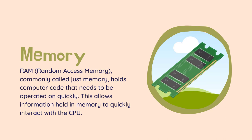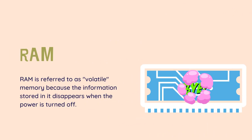All computers do this automatically. RAM is just one part of the computer that determines your speed. RAM is referred to as volatile memory because the information stored in it disappears when the power is turned off. Hard drives and flash drives, on the other hand, contain non-volatile memory, which is like paper — it can be destroyed or erased, but when properly taken care of, can last forever.